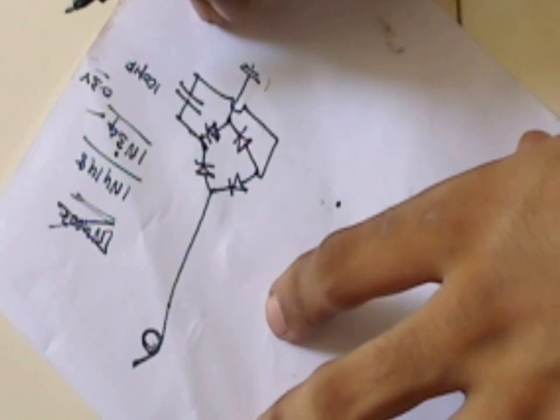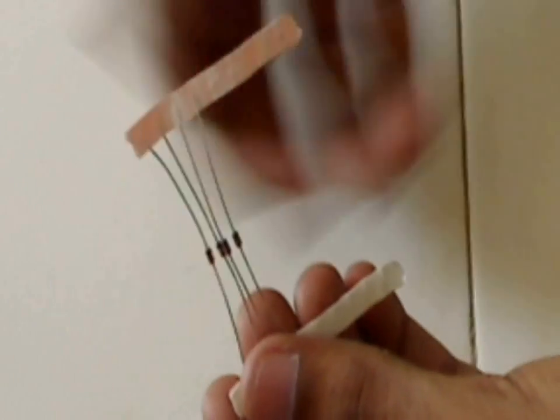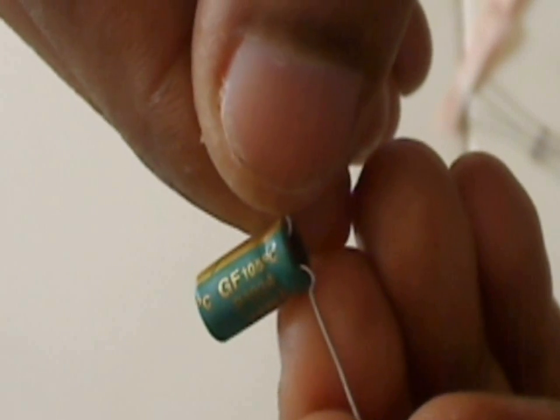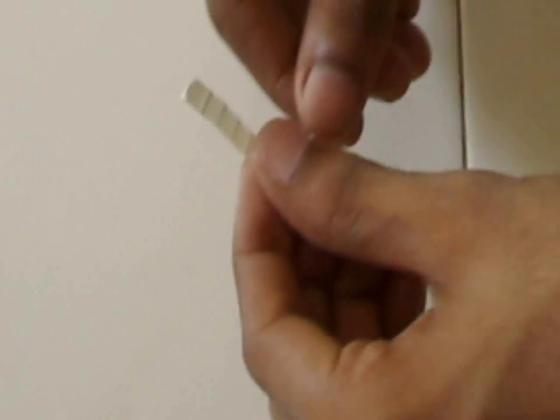So let's make this circuit and see. We are considering 1N4148 diodes and a 100 microfarad capacitor. We will first make a bridge rectifier.